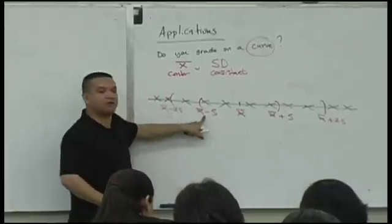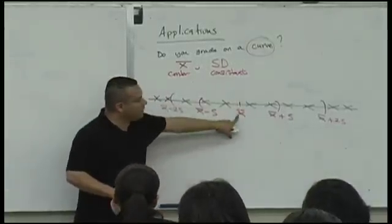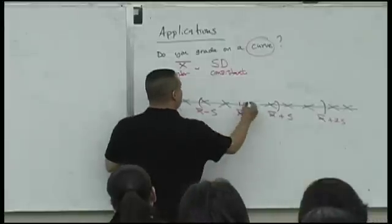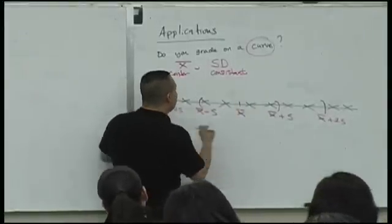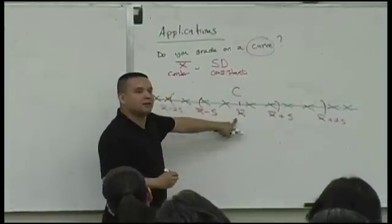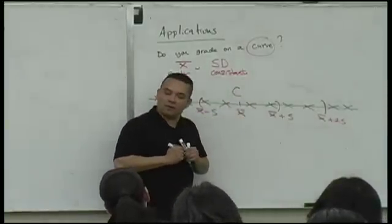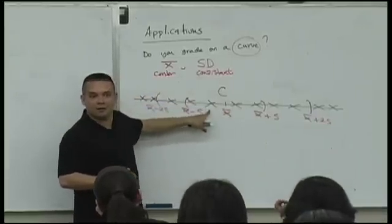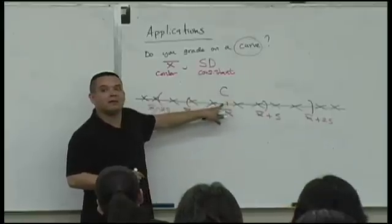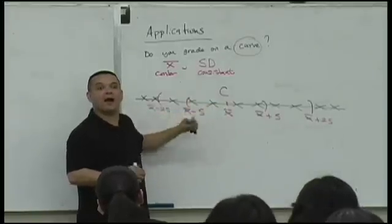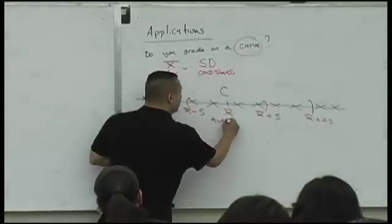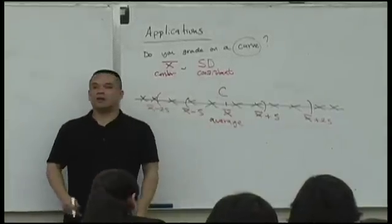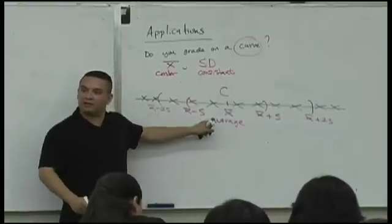Everyone who scores within one standard deviation of the mean — in that first interval — gets a C. Why a C? Because their score is around the center, the mean, the average. If your score is in that interval, it's an average kind of score, because it's around the mean.